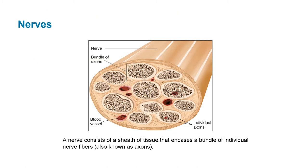When we talk about nerves, we're talking about bundles of neurons — multiple bundles of bundles of neurons. A nerve consists of a sheath of tissue that encases a bundle of individual nerve fibers, which are the axons. Within nerves, there are also blood vessels providing nutrients. You've got multiple different bundles of axons in each nerve, so a nerve is composed of many, many neurons.